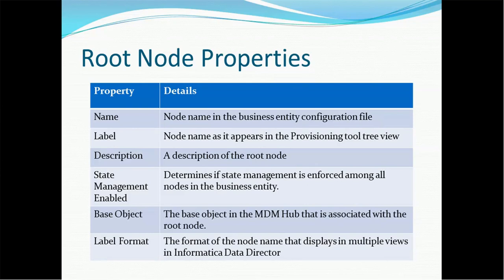There are six properties associated with each root node, applicable to business entity root nodes, lookup root nodes, etc. These properties are: name, label, description, state management enable, base object, and label format.